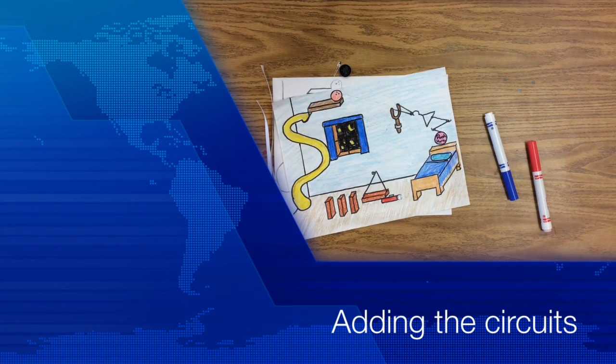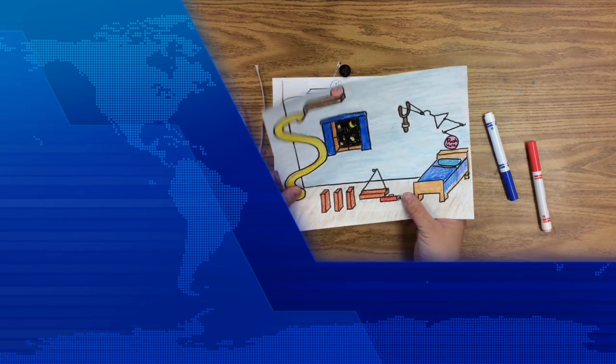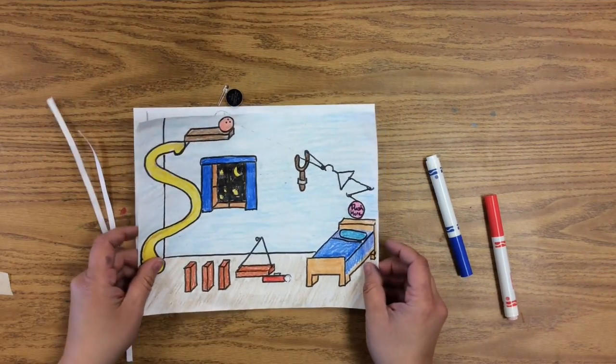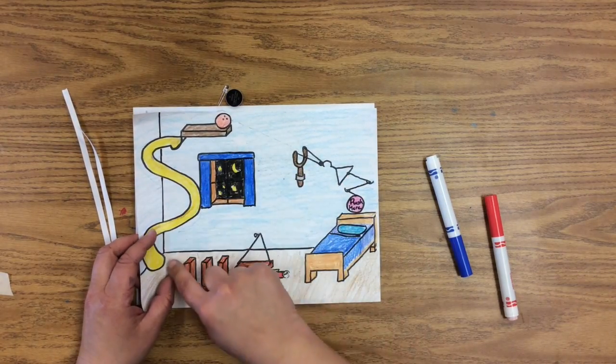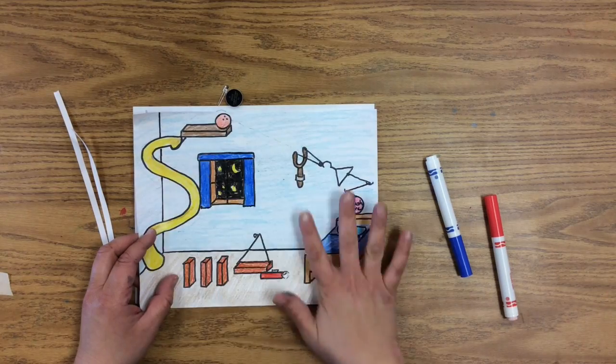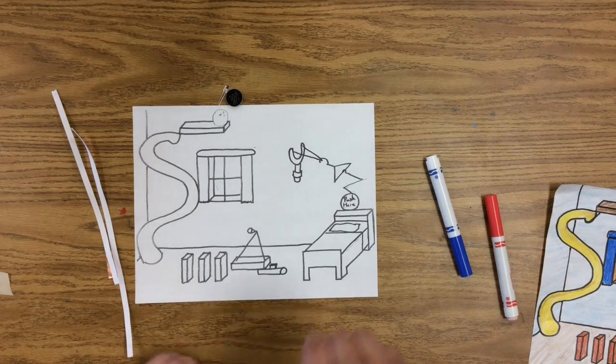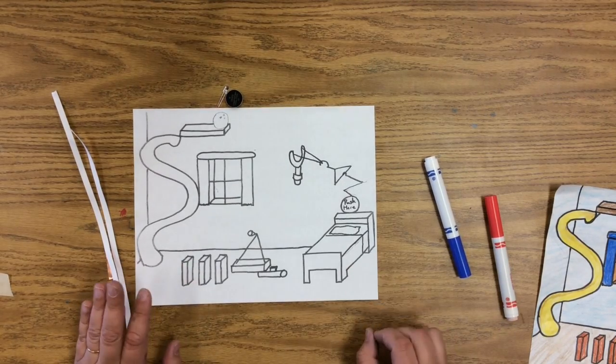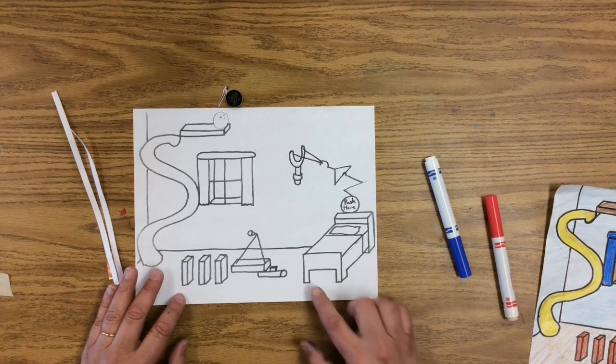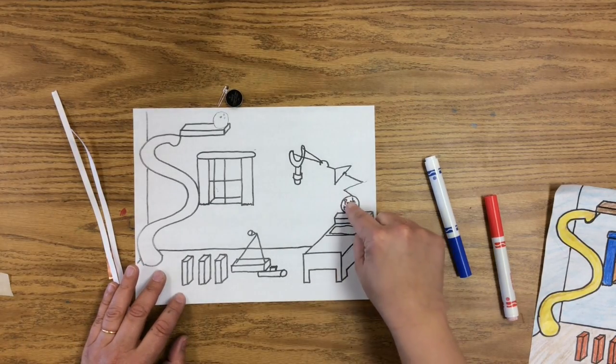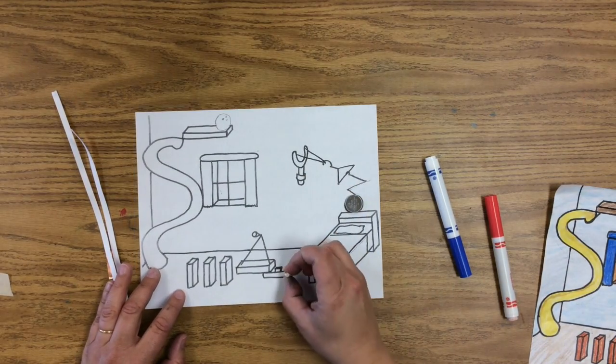After you have drawn out your Rube Goldberg device, and you have your push button, your light source, and at least five connections in between, you've colored it all in, you should have gotten a second copy of your original drawing. What we're going to do now is map out how we can connect here, this is where the battery's going to go, to here where the light is going to go.